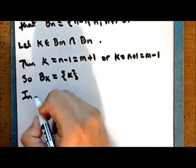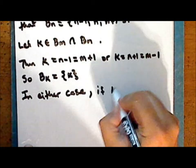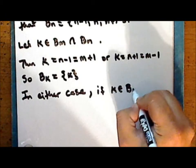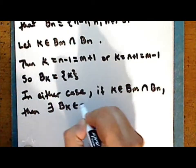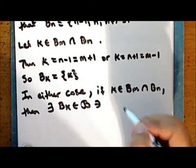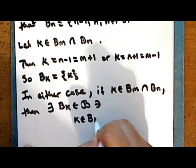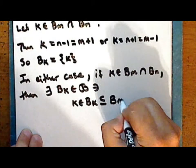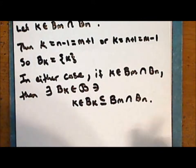In either case, if the element k is in the intersection of b sub m and b sub n, then there exists the element b sub k in the collection script B such that the point k is in this element, which is a subset of the intersection of b sub m and b sub n. So the second condition is satisfied.